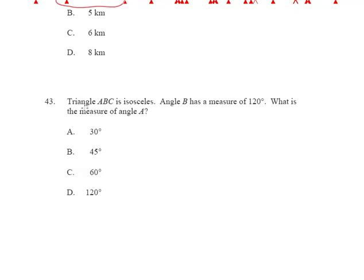Okay everybody, we have a question now that says triangle ABC is isosceles. What that means is that two angles are equal. So two of the angles will be equal in here.